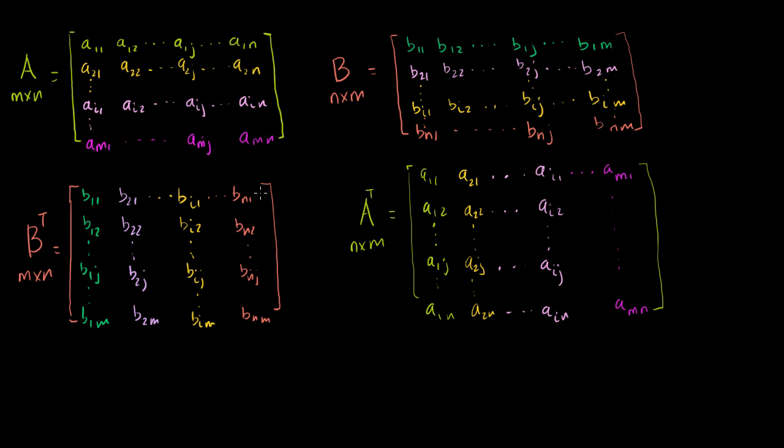And then I also wrote out their transposes. So if you look at the transpose of B, B was an n by m matrix. Now the transpose is going to be an m by n matrix. And each of its rows become its columns.